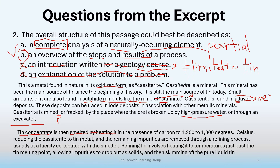And remember, these are all describing smelted by heating, high-pressure water — these get into a process of how things are done. There are many processes: first it's found as a sulfide mineral, then it's given heat or excavated, then you skim it to tin purity, and then skimming off the pure liquid tin. So we have our answers, and they're in the passage. If you have any questions with the Jacobitz Learning Group, the contact information is at the beginning of the essays where we're located — you can email us. Thank you so much for watching.